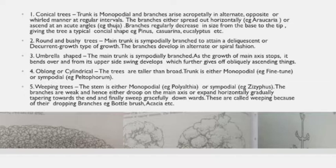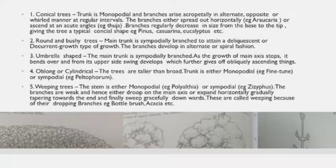In oblong or cylindrical canopy, the length of the tree appears to be more than its breadth. The trunk is monopodial — example Jacaranda — or sympodial in case of Peltophorum. The main branches grow more vigorously in the upright direction and the lateral branches are short and obliquely ascending. Examples are Begonia and Artocarpus.